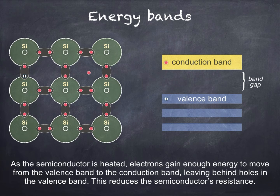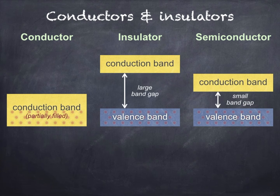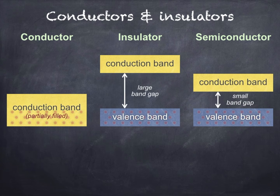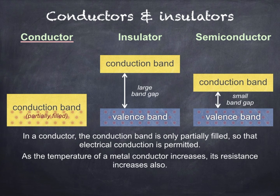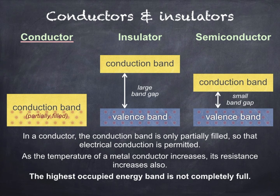Next, we'll look at energy bands in a little more detail. We only need to consider the valence band and the conduction band in order to explain the electrical properties of semiconductors — and for that matter, conductors and insulators. Remember that in order for a material to conduct, it must have electrons which are free to move within its conduction band, or holes in its valence band. In a conductor, conduction can actually be explained by considering only the conduction band — the conduction band is only partially filled, so electrical conduction is permitted.